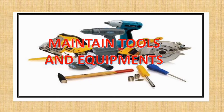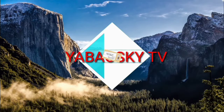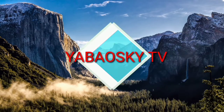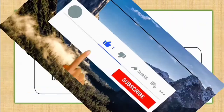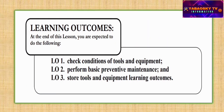Good day everyone. In this visualization, we will discuss some principal ideas on maintaining tools and equipment. We will now proceed with our learning outcomes. In maintaining tools and equipment, we have three learning outcomes to study: first, check condition of tools and equipment; second, perform basic preventive maintenance; and third, storing tools and equipment.